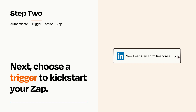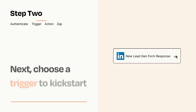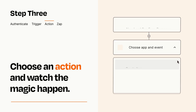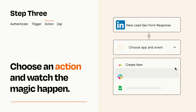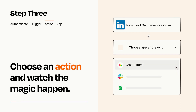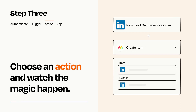This last part is where the magic happens. Choose the action you want to happen in your target app. You'll see a bunch of fields where you can specify the details of your Zap. You can type free form text or pull data in from your trigger step as needed.